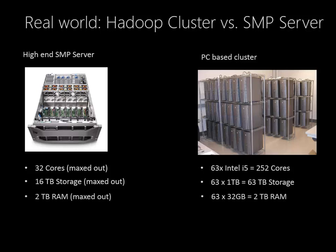The SMP server can be ordered with a maximum of 2 terabytes of RAM — we can't add any more than that. On the PC side, we can order PCs with 32 gigabytes of RAM, and 63 of those would give us 2 terabytes of RAM — the same amount. The cost side is quite different. The high-end SMP server configured like this has a list price of about $157,000, while the PC-based cluster costs about $44,000. So if we could process the same workload on the cluster as on the high-end SMP server, we'll save a lot of money.